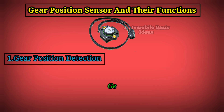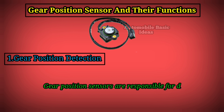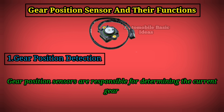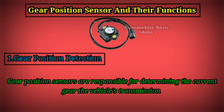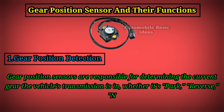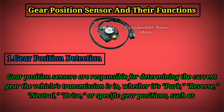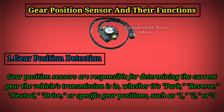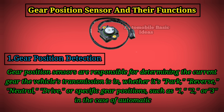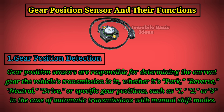One: gear position detection. Gear position sensors are responsible for determining the current gear the vehicle's transmission is in, whether it's park, reverse, neutral, drive, or specific gear positions such as one, two, or three — in the case of automatic transmissions with manual shift modes.